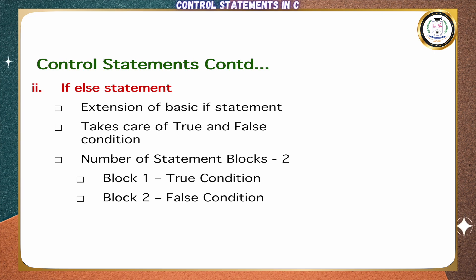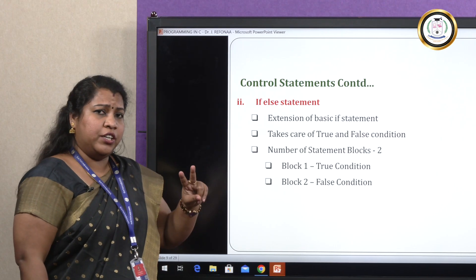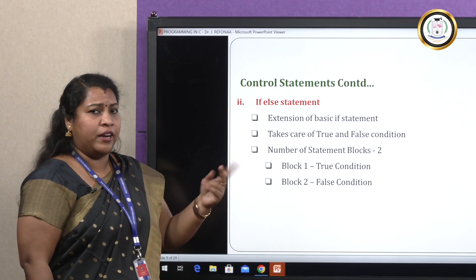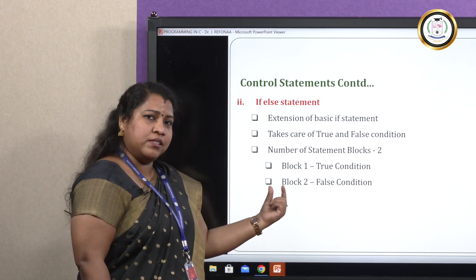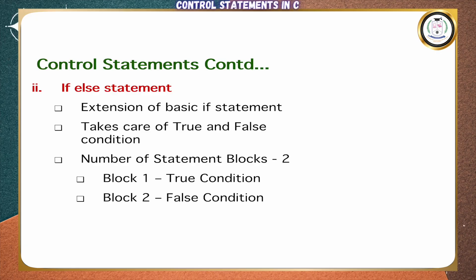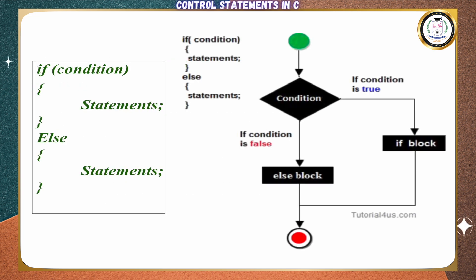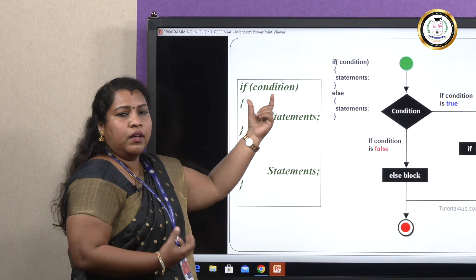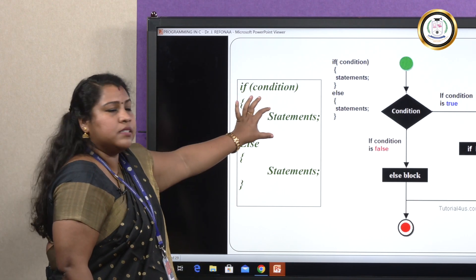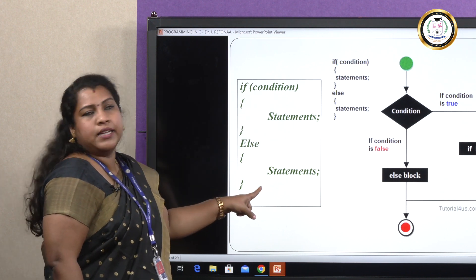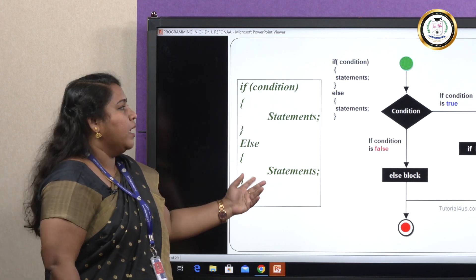Next we are going to see about the if-else statement. The if-else statement is an extension of the basic if statement. It has two conditions and takes care of both true and false conditions. It has two execution blocks. If the condition is true, block 1 will be executed; if the condition is false, block 2 will be executed. Here is the syntax: 'if' is the keyword, followed by the condition. If the condition is satisfied, the true block statements will be executed; else, the false block statements will be executed.